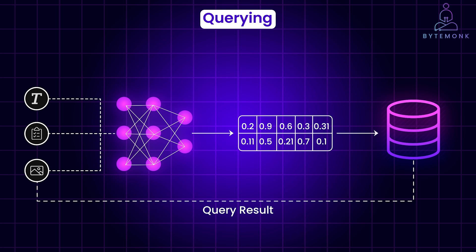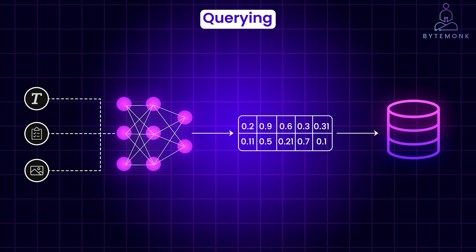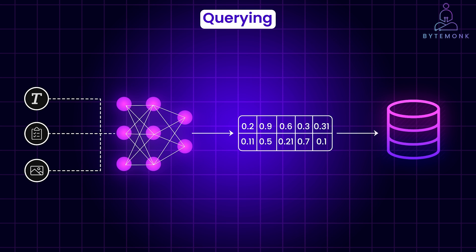To get data into this vector format, we use algorithms like word embeddings that transform text, images, or audio into dense vector representations. Similar items end up with vectors that are close to each other in the vector space. Think of it as plotting points on a graph where the distance between points signifies how similar the underlying items are.